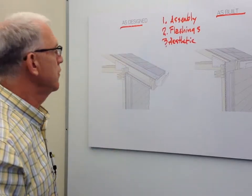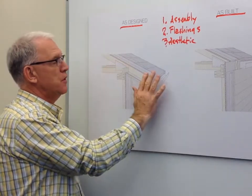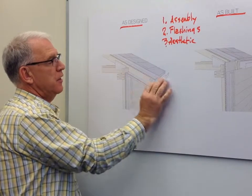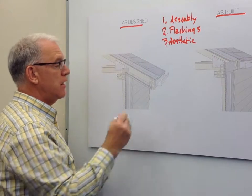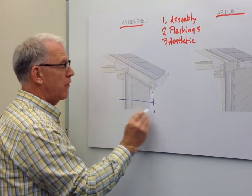So first, the assembly. The way the wall was originally designed projected the gutter and all of the water handling issues out 18 inches away from the wall.